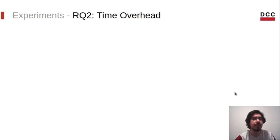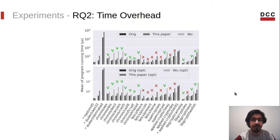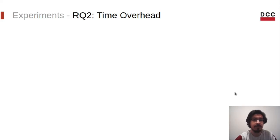And now, let's move to the time overhead imposed onto programs. Here, we have the results for the unoptimized code. We can see that our tool won most of the time. And the same is true for the optimized versions. We have optimized code with the flag O1 of LLVM. So in the optimized versions, we also won most of the times.